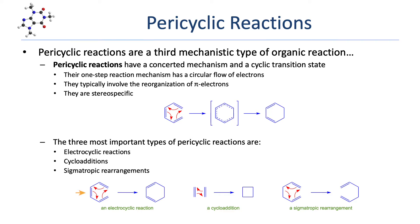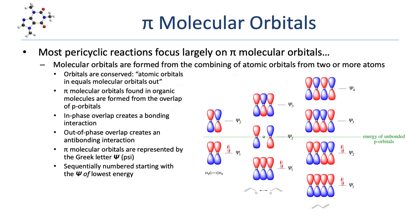Electrocyclic reactions form a new ring from the closure of a single pi system. Cycloadditions form a ring from the addition of two separate pi systems. Sigmatropic rearrangements involve the migration of atoms via movement of a sigma bond. We'll cover each of these three types of pericyclic reaction in greater detail in future lessons. For now, we'll be focusing on the fundamental concepts needed to understand pericyclic reactions.